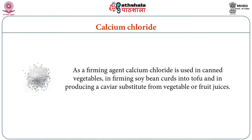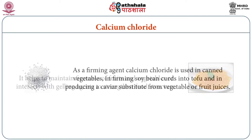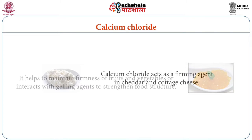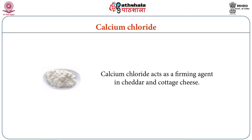Calcium chloride as a firming agent is used in canned vegetables, in forming soybean curd into tofu, and in producing a caviar substitute from vegetable or fruit juices. It helps to maintain firmness of fruits and vegetables or interact with gelling agents to strengthen the food structure. Calcium chloride acts as a firming agent in cheddar and cottage cheese.